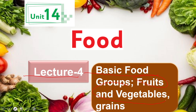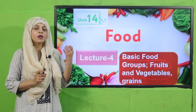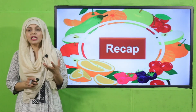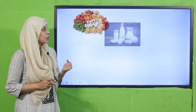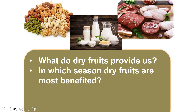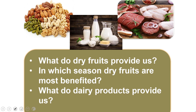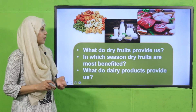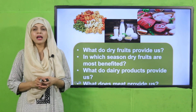Today we will discuss fruits, vegetables and grains. In the previous lecture, we already discussed the first three primary groups of food which were dry fruits, meat and dairy products. Let's quickly recap: dry fruits provide us with minerals and fats. They are most beneficial in winter season because they keep us warm. Dairy products provide us with nutrients, minerals and protein. Meat provides us with proteins.